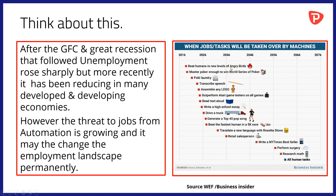There's an interesting graphic here that tries to estimate when jobs and tasks will be taken over by machines. Do spend some time looking at it — though you'll see that even these predictions are, in some cases, already out of date. Driving a truck and reading text out loud, for instance, are two things that automation has already been able to achieve well ahead of schedule.